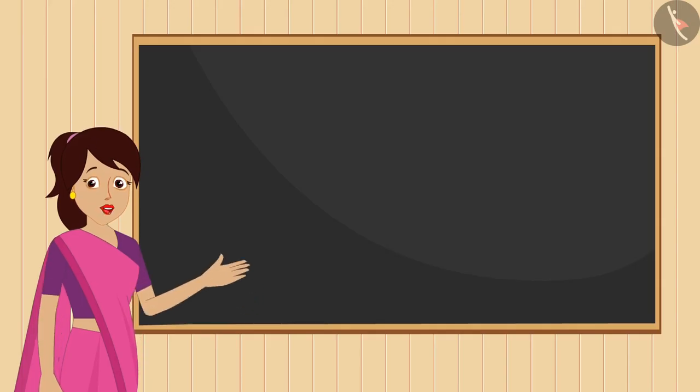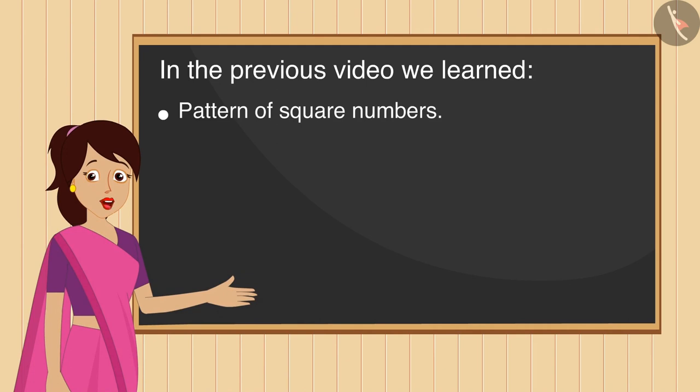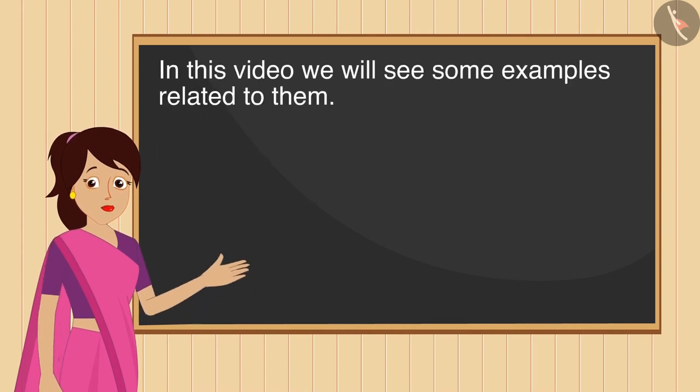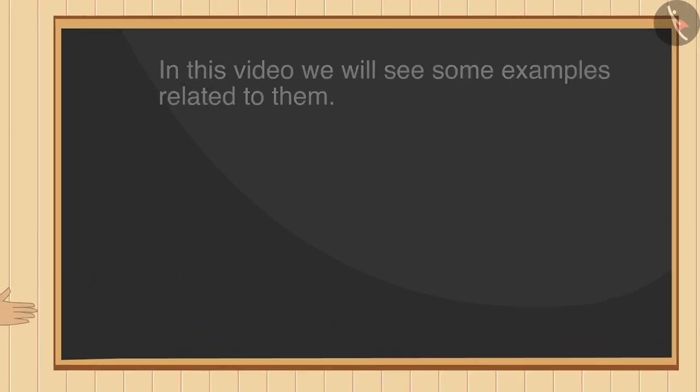Hello friends. In the previous video we learned about the pattern of square numbers, the method of finding the square of a number, and the Pythagorean triplet. In this video we will see some examples related to them.